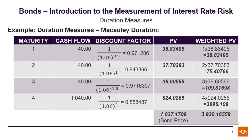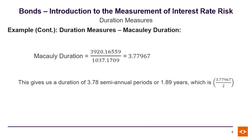Dividing the weighted present value by the price, we get a Macaulay duration of 3.77967, or approximately 3.78. This gives us a duration of 3.78 semi-annual periods, or 1.89 years, which is 3.77967 divided by 2.